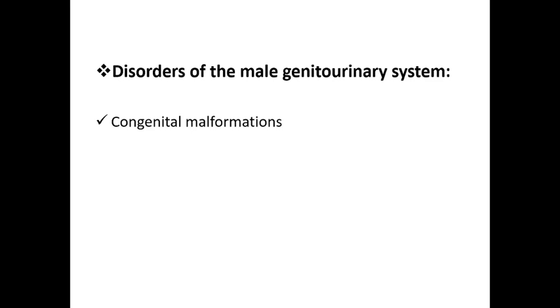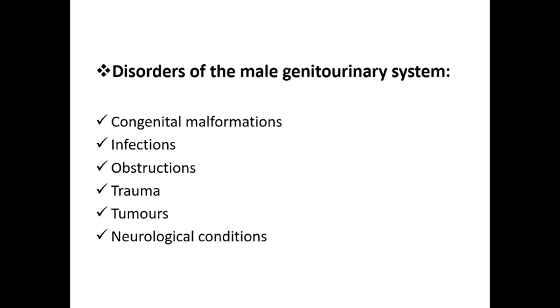Now we will see some disorders in the male genitourinary system. What could be the reason? It could be due to some congenital malformations, infections, obstructions, trauma to the genitourinary system, tumors in the genitourinary organs, or certain neurological conditions that can affect genitourinary functions — for example, spinal cord injury.